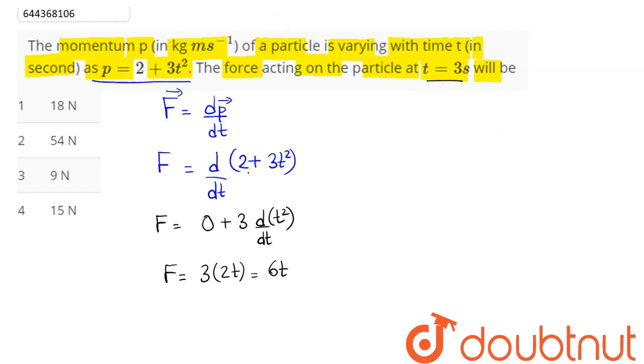Now, at t equal to 3 second, this force can be written as t equal to 3 second. We have f equal to 6 into 3, which is equal to 18 newton. Hence, 18 newton means option number 1 is the correct answer. So, 1 is our answer.